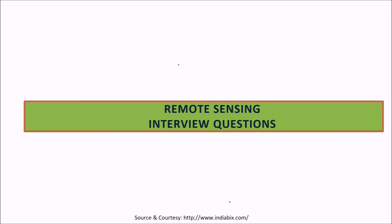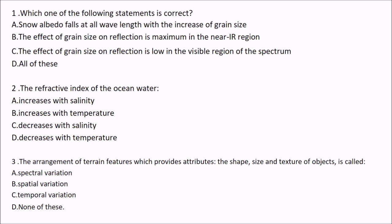Now let us see some remote sensing interview questions and answers. First: which one of the following statements is correct? Snow albedo falls at all wavelengths with the increase of grain size. The effect of grain size on reflection is maximum in the NIR region. The effect of grain size on reflection is low in the visible region of the spectrum. The answer is D — all of these. All three statements are true.